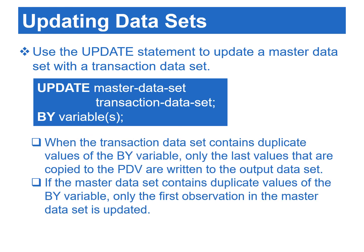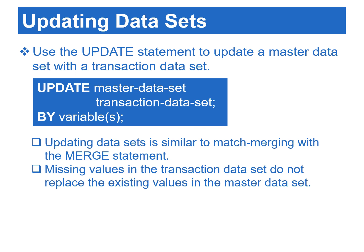When the transaction data set contains duplicate values of the by variable, only the last values copied to the PDV are written to the output data set. If the master data set contains duplicate values of the by variable, only the first observation in the master data set is updated, and SAS will write a warning message in the log. Updating data sets is like match merging with the merge statement. However, unlike the merge statement, missing values in the transaction data set do not replace the existing values in the master data set. Thus, if we would like to update only some observations of a specific variable, we can set the observations we do not want to change to missing in the transaction data set.